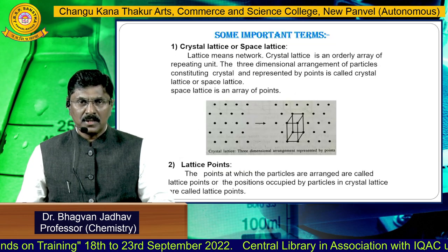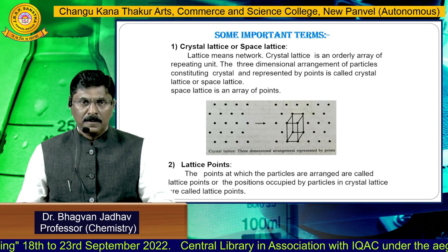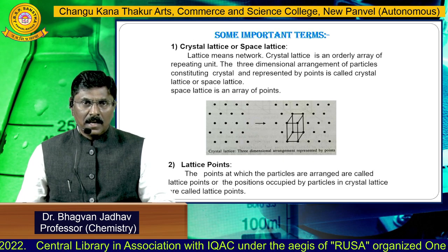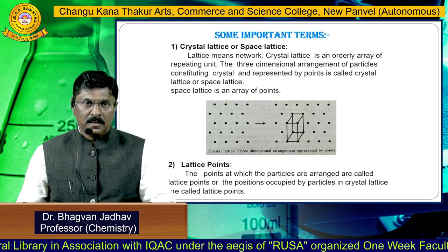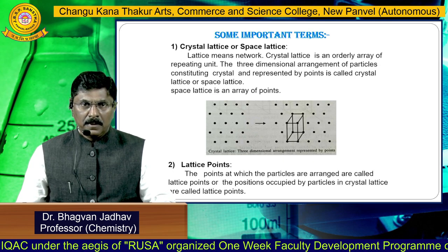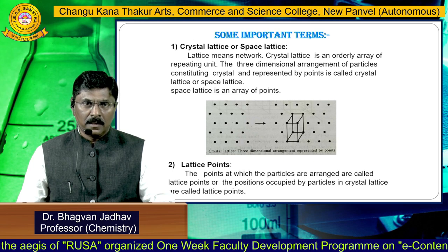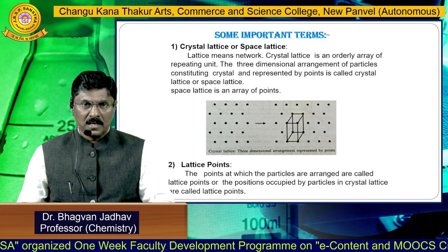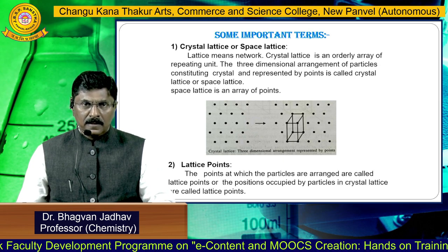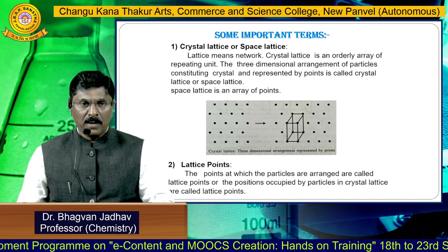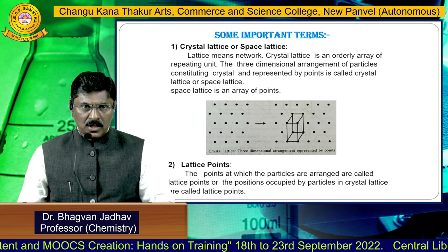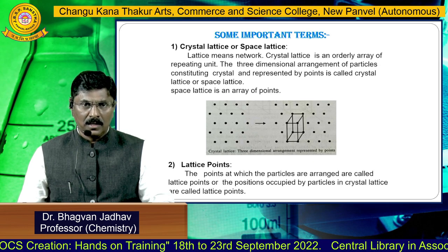Some important terms involved in solid-state chemistry: the first term is the crystal lattice or space lattice. A lattice means a network, and the crystal lattice is an orderly arrangement of repeating units. The three-dimensional arrangement of packing constituents represented by points is called a crystal lattice or space lattice. This space lattice is an array of points. The second term is lattice points — the positions occupied by particles in a crystal lattice are called lattice points.